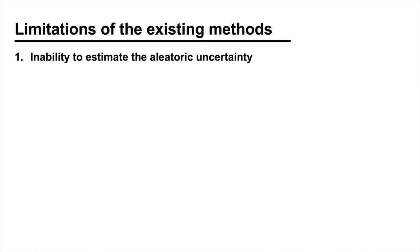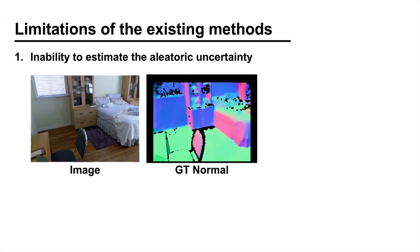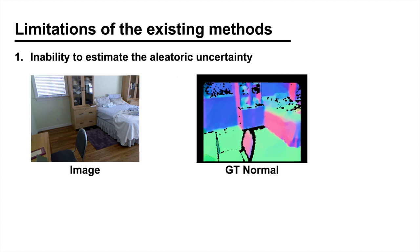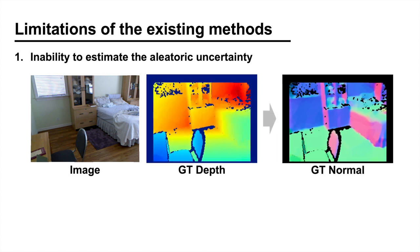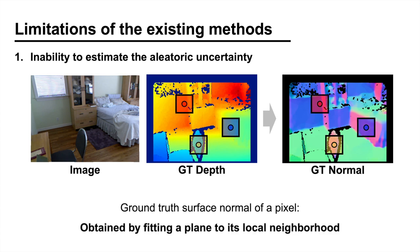The aleatoric uncertainty captures the noise inherent in the data, so we first need to understand how the data is obtained. For most datasets, the ground-truth surface normal is not measured directly, but is calculated from a depth map.